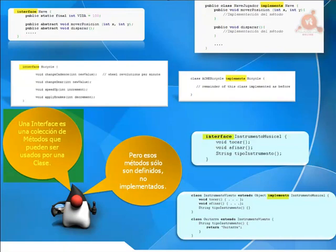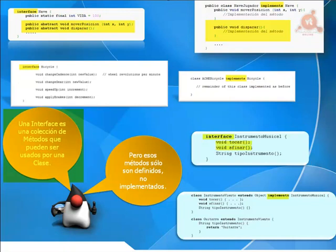Java cuenta con dos palabras clave para el uso de interfaces: la palabra clave 'interface', que se usa cuando se crea ese interface, y la palabra clave 'implements', que se usa cuando vamos a hacer que una clase utilice una determinada interface. Dentro de la interface se crean los métodos pero no se implementan; simplemente se indica el tipo, el nombre y los parámetros. Será posteriormente, cuando se utilice el método de la interface dentro de una clase, cuando se implemente con las distintas declaraciones que queremos que se ejecuten.